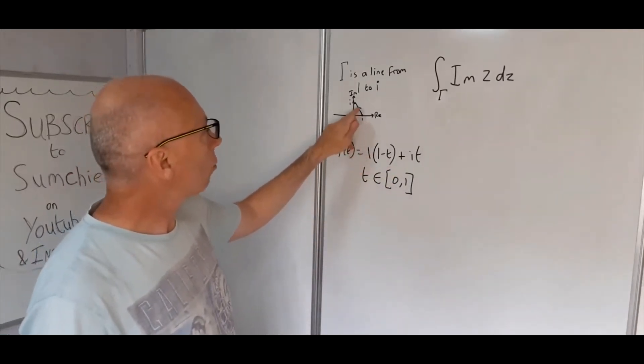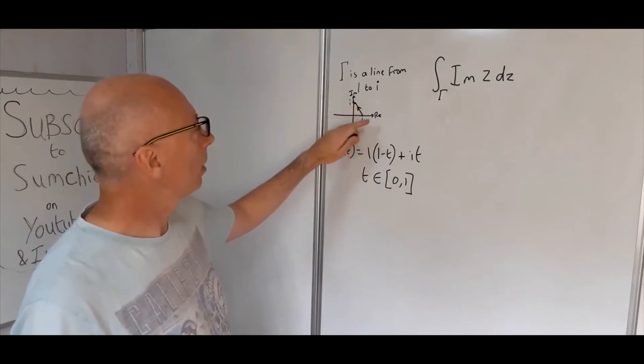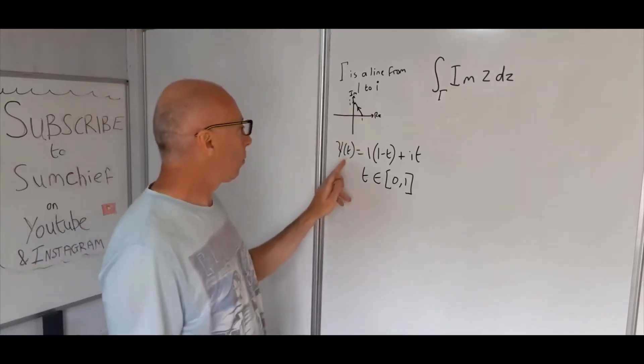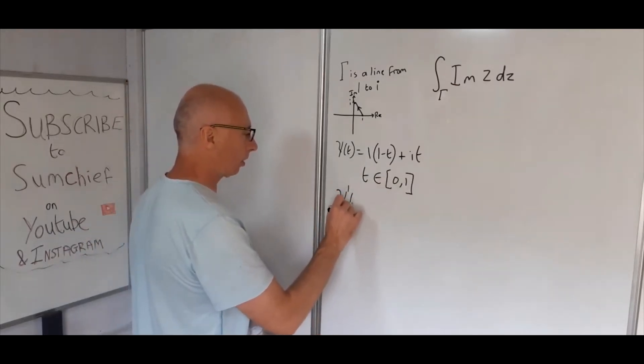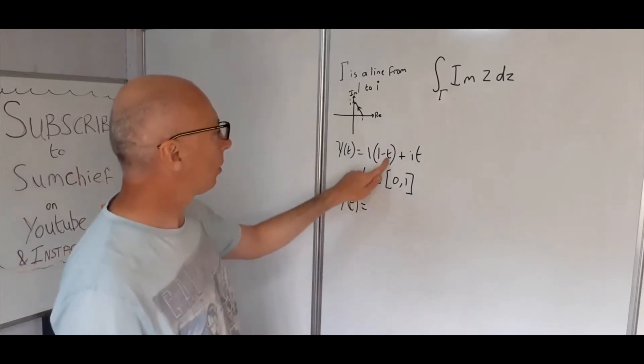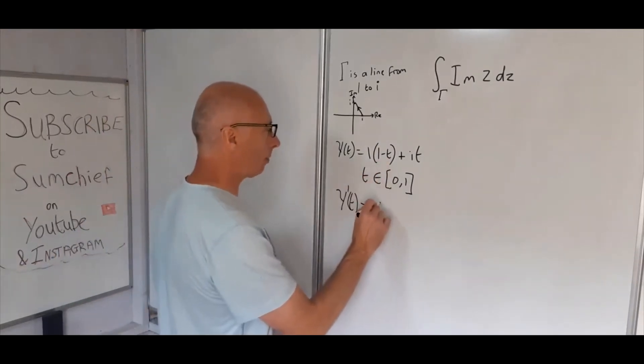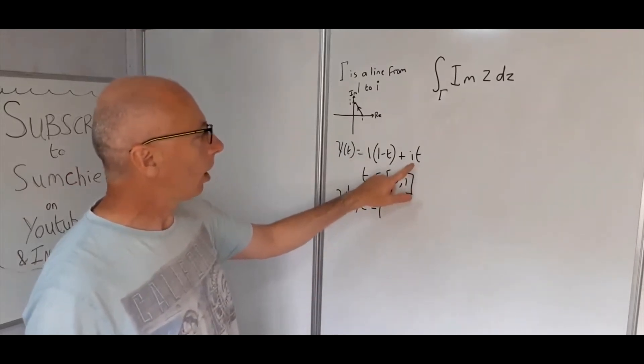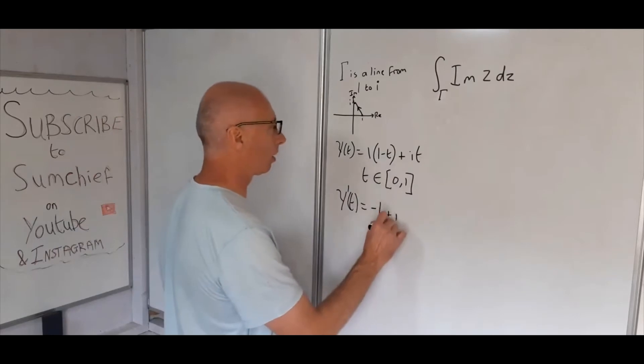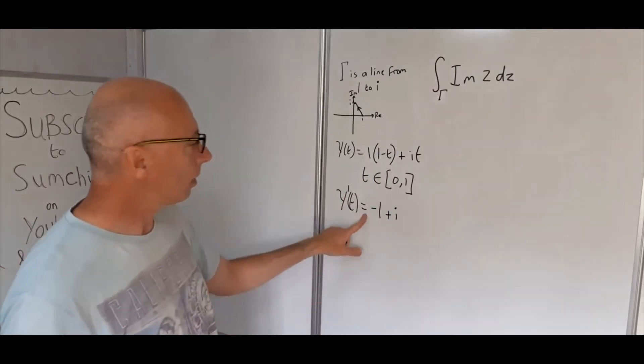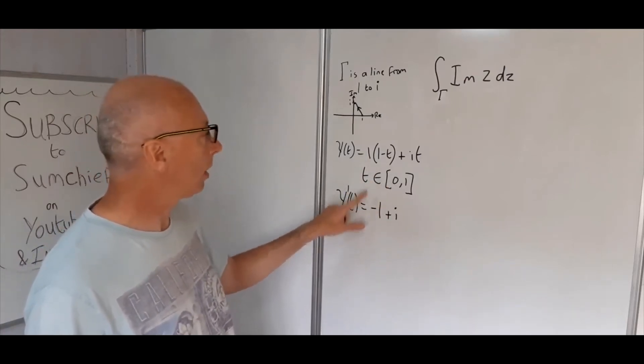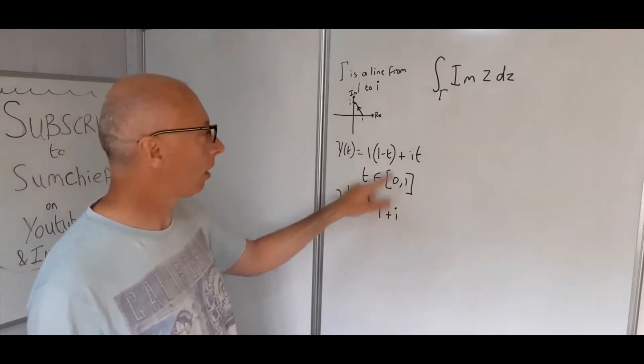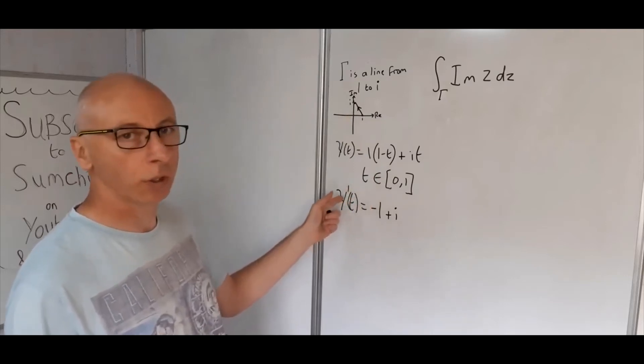We can see that this straight line is a smooth path. If we integrate this gamma function and take the derivative of gamma(t), we get -1 + i. We can see that this derivative is not 0, and the function is also continuous within t in [0, 1], so we can use the integral formula where we use parameterization.